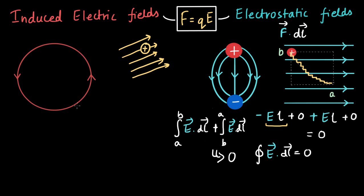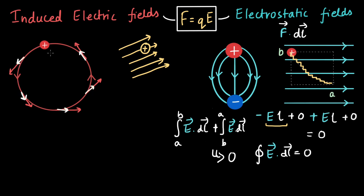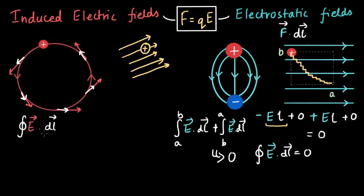Now let's think about the work done by an induced electric field in a closed loop. We take the same positive test charge and move it around the loop once. For an induced electric field, the field direction is always tangent to the loop, and the displacement vector is also tangent to the loop when moving in the same direction. So the work done is positive at every instant — more and more work accumulates until the charge returns to its starting point. The net work done in a closed loop is not zero; in fact, it equals the EMF.